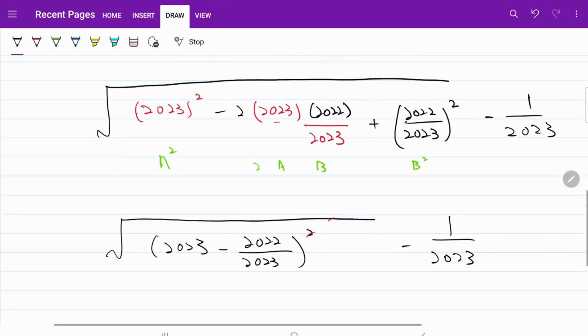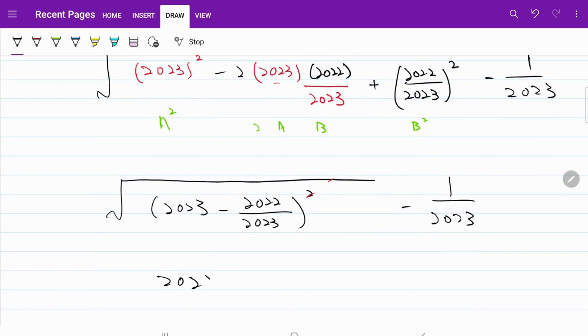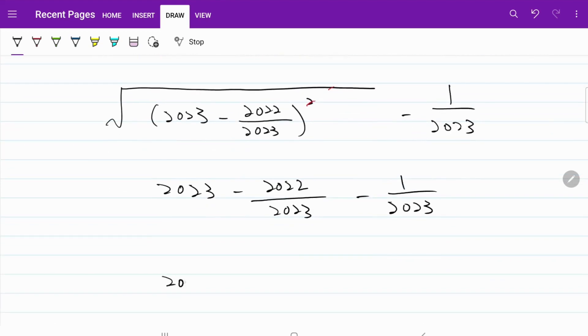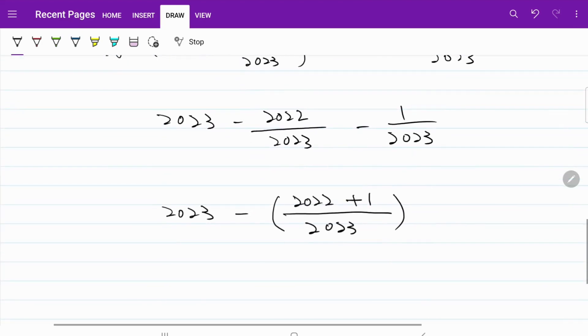So now what I have is 2023 minus 2022 over 2023 minus 1 over 2023. Let's go ahead and put a bracket. I have 2023 minus 2022 plus 1 over 2023, which is equal to 2023 minus 1. That's equal to 2022.